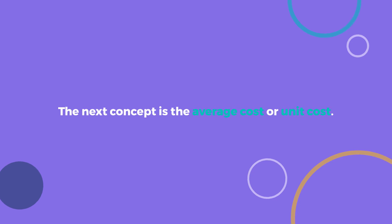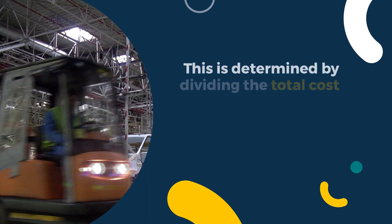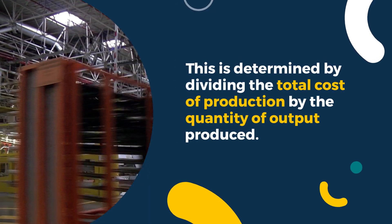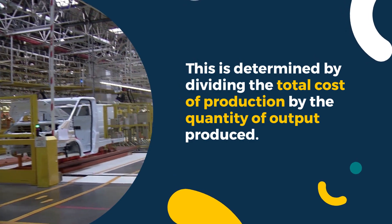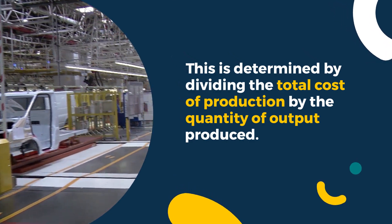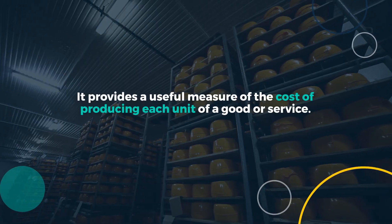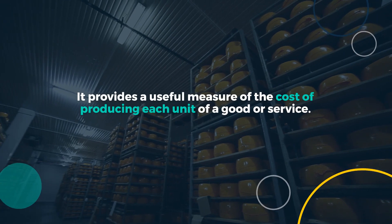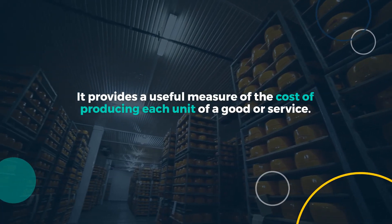The next concept is the average cost, or unit cost. This is determined by dividing the total cost of production by the quantity of output produced. It provides a useful measure of the cost of producing each unit of a good or service.